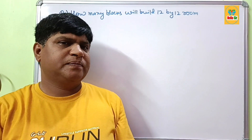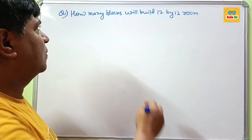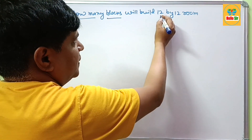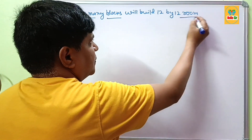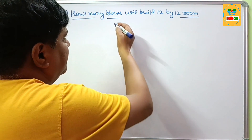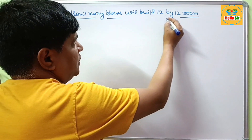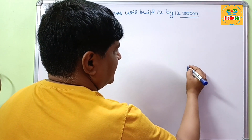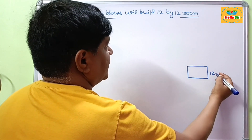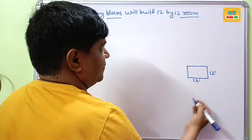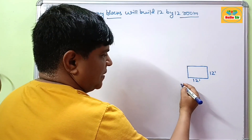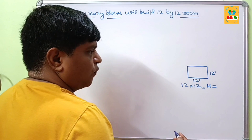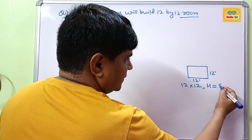Hi guys, today in this video we will learn how many cinder blocks are required to build a 12x12 room. It means how many concrete blocks are required to build this size room. If your room size is 12 feet by 12 feet, the dimension is 12x12 and the height of the wall is about 8 feet.